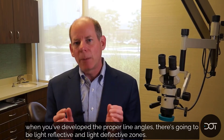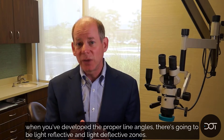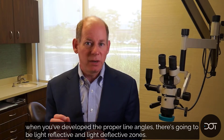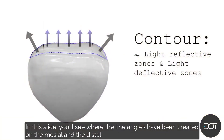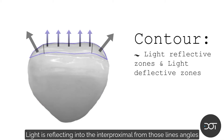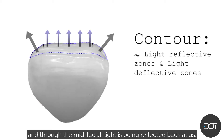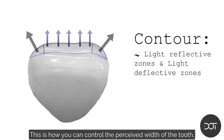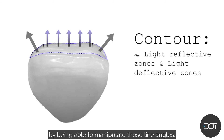Being able to create tooth form that is much more natural. When you've developed the proper line angles, there are going to be light reflective and light deflective zones. You'll see how where the line angles have been created on the mesial and the distal, light is reflecting into the interproximal from those line angles, and through the midfacial, light is being reflected back at us. This is how you can control the perceived width of the tooth by manipulating those line angles.